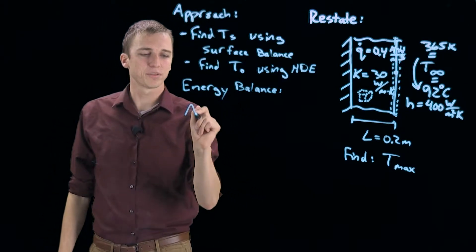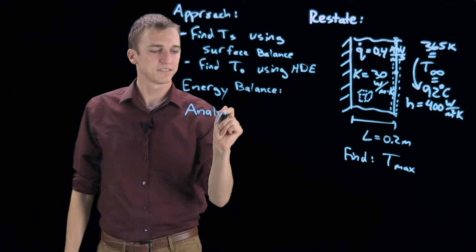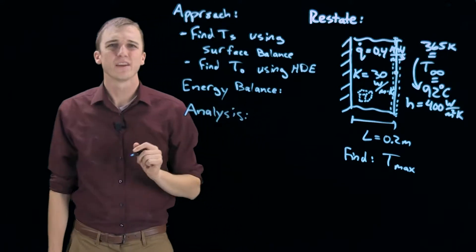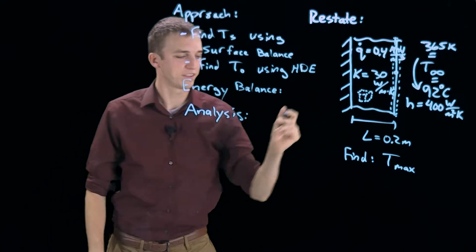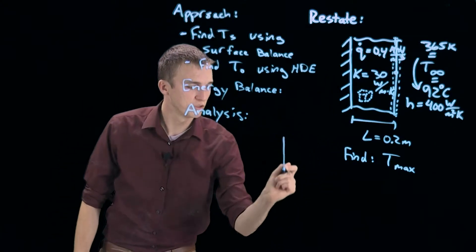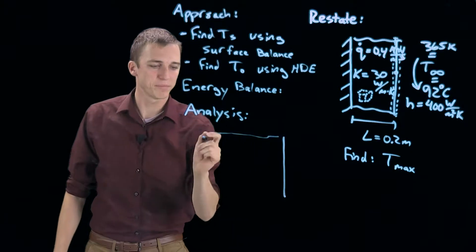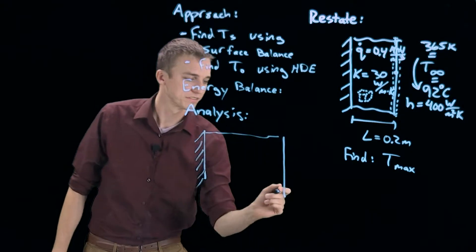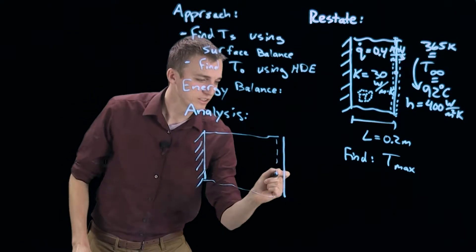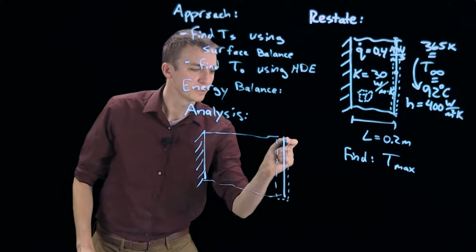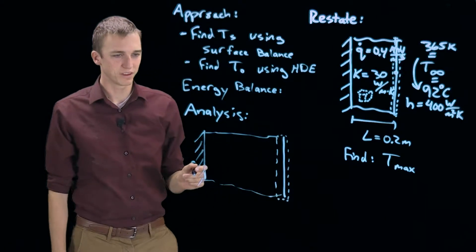Let's go ahead and perform some analysis. We are going to redraw just a small chunk of this wall so we can kind of zoom in and see a little bit better what our energy balance is going to look like. So again this is our 1D wall, we are going to draw our control surface just like this.